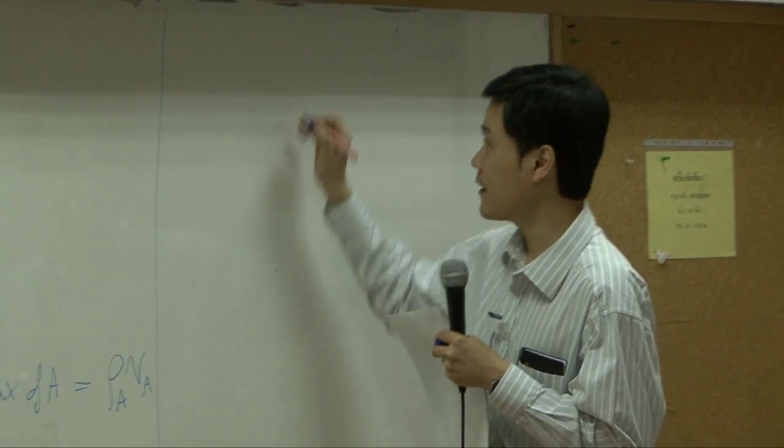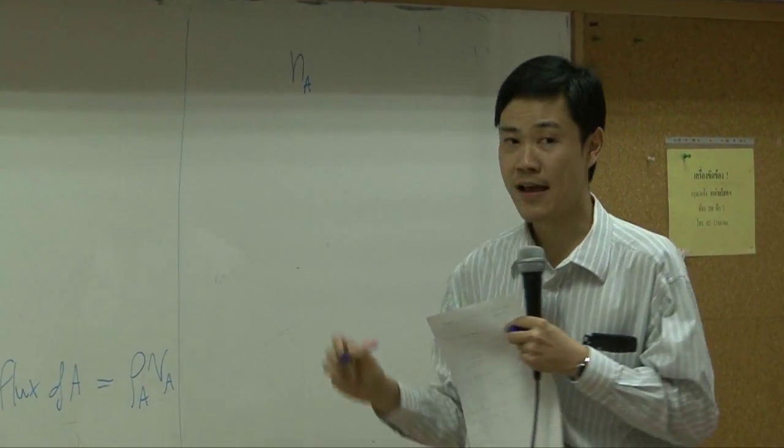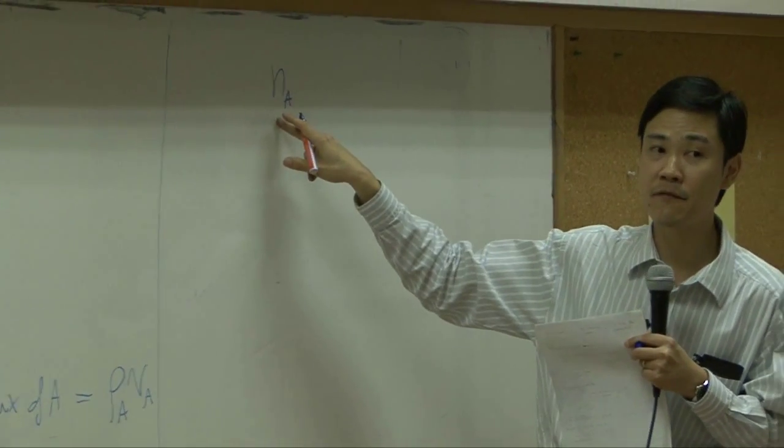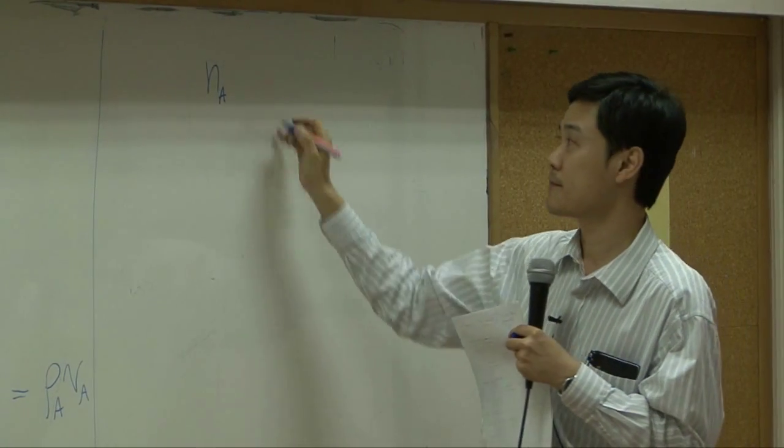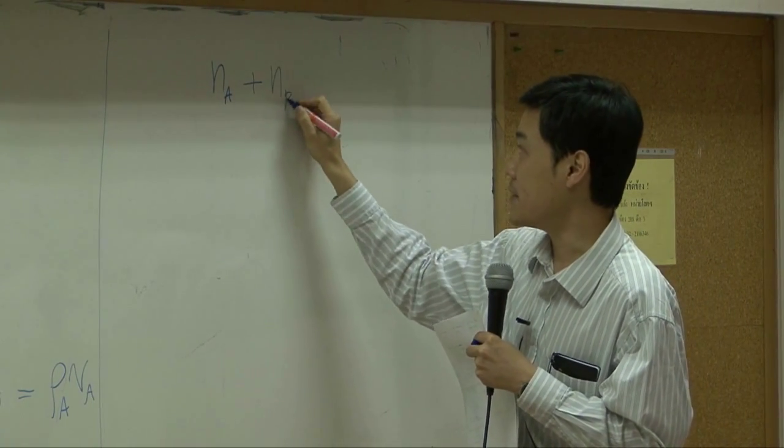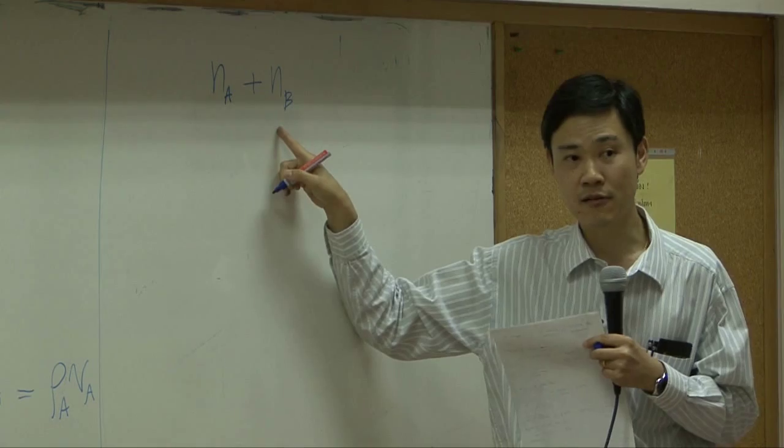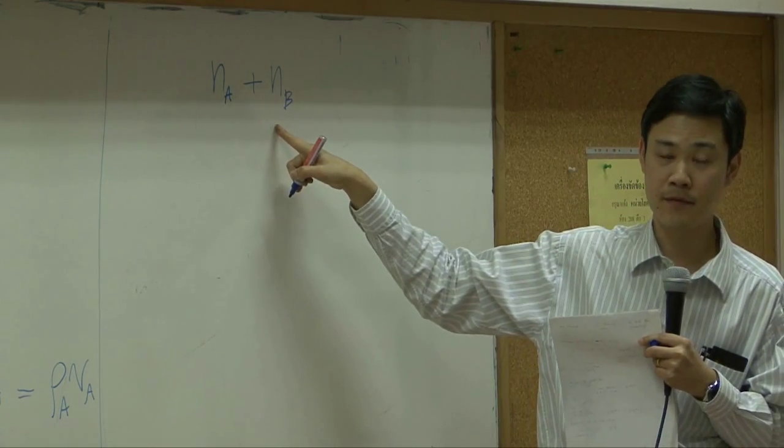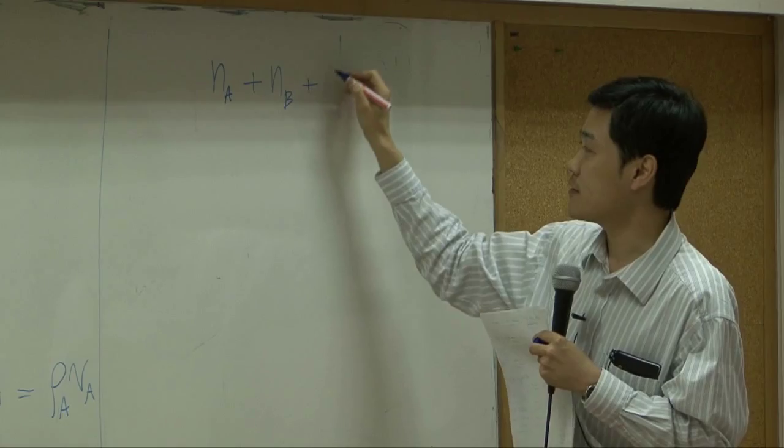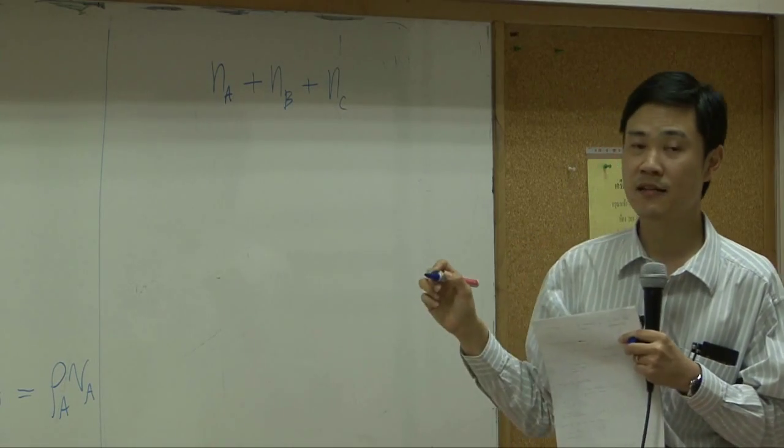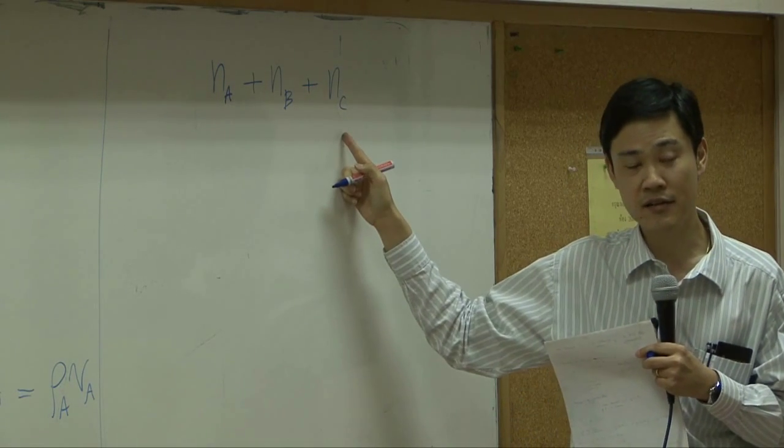Now, if I have Na, this is combined flux of specie A, added by NB. This is combined flux of specie B. If I have, suppose I have three species, specie A, B, and C together in the system.